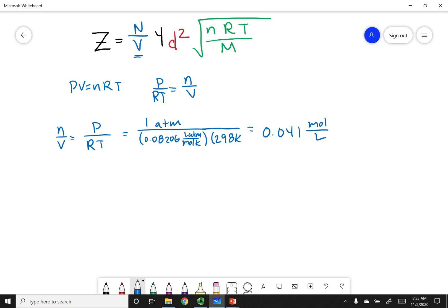I want you to be careful here. I solved for small n over volume, and small n is moles. I want big N, which is molecules. So if I take that 0.041 moles per liter, I know that I have 6.022 times 10 to the 23rd molecules per mole. So the moles cancel out. And I also know that 1,000 liters is a cubic meter.